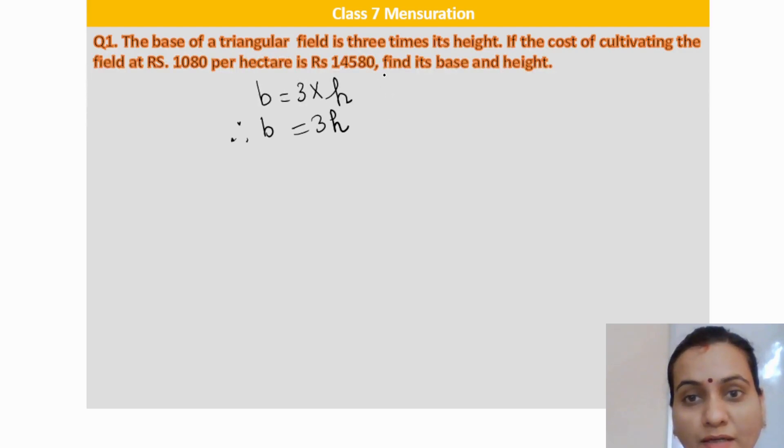The rate is given in hectare, 1080 per hectare. We don't know the area. First we need to find the area. So, the total cost of cultivating the field divided by the rate of cultivating the field, we'll get the area.